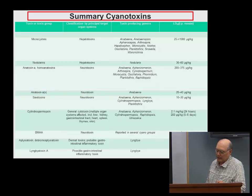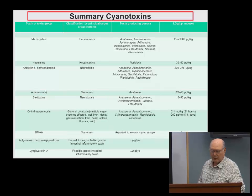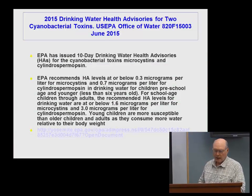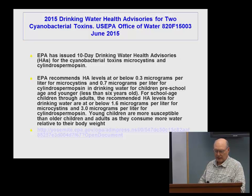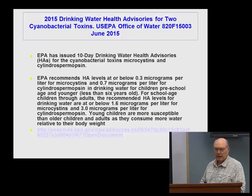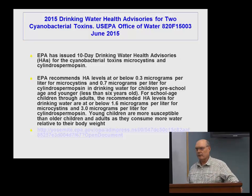We've already seen this in a couple of places, but this is a summary of the toxins we want to be managing and mitigating, along with the blooms that produce them. The EPA just in 2015 set two advisories — 10-day drinking water advisories for microcystin and cylindrospermopsin. That's important information, but now how are you going to manage and mitigate it?